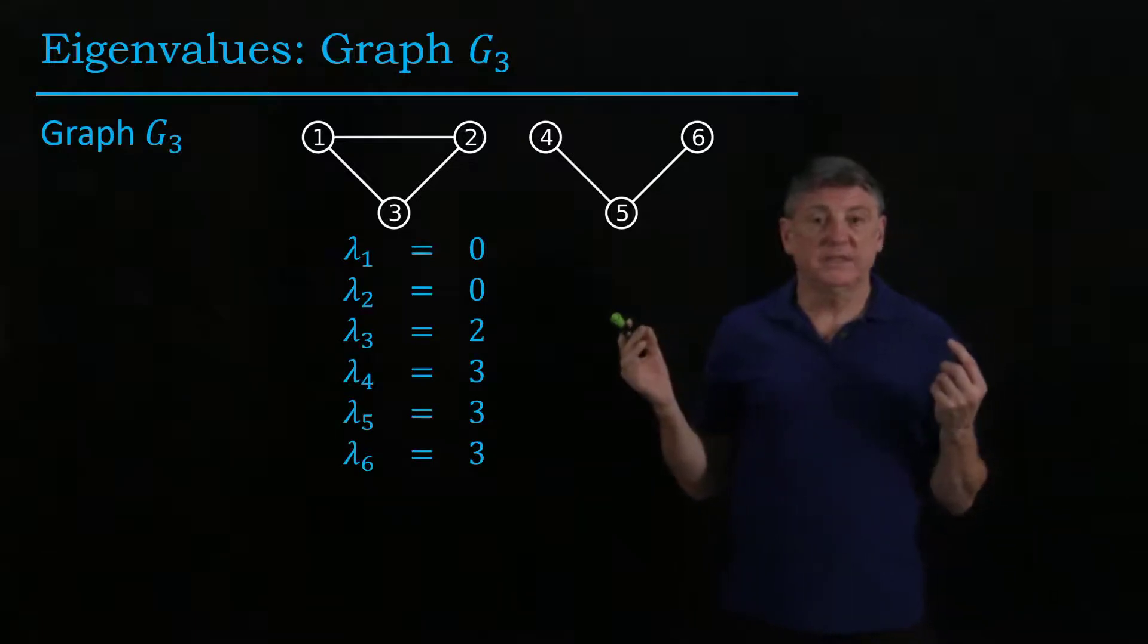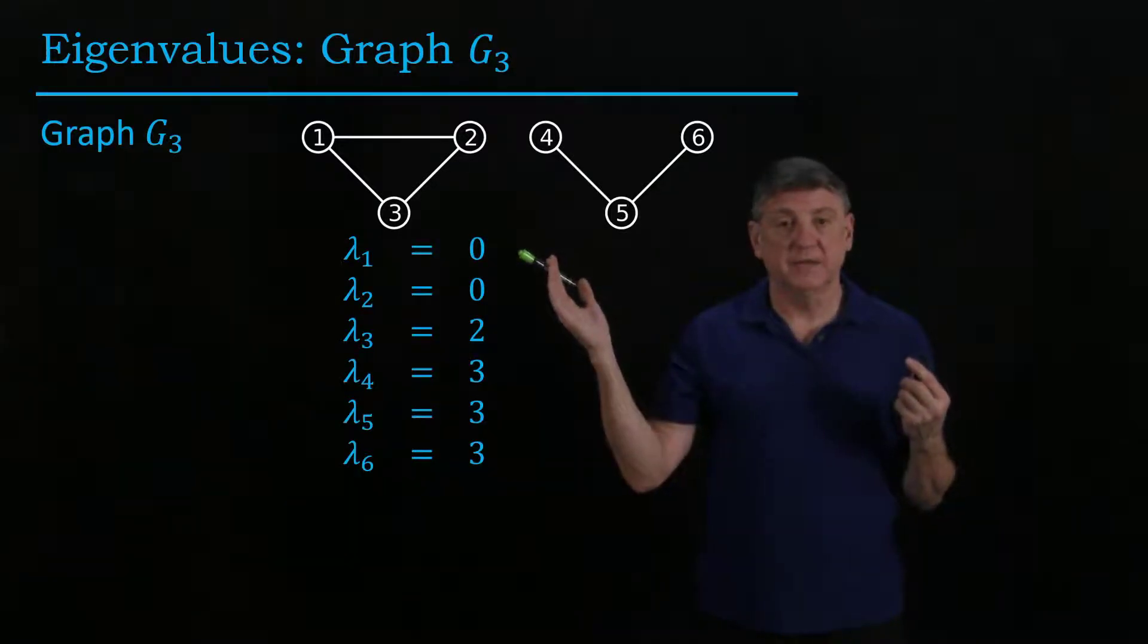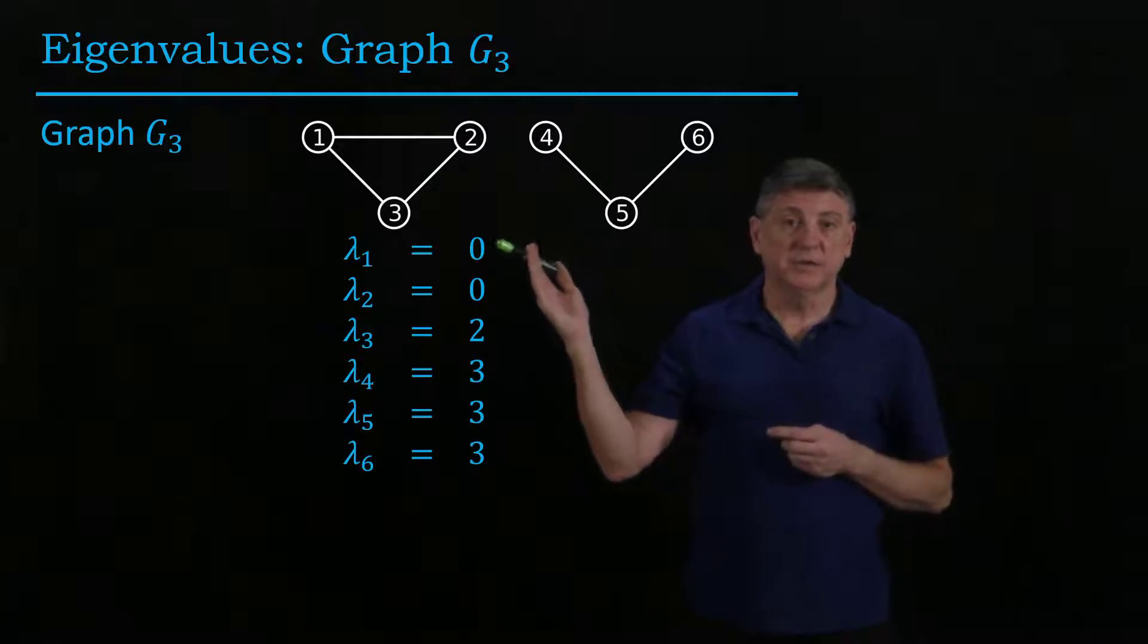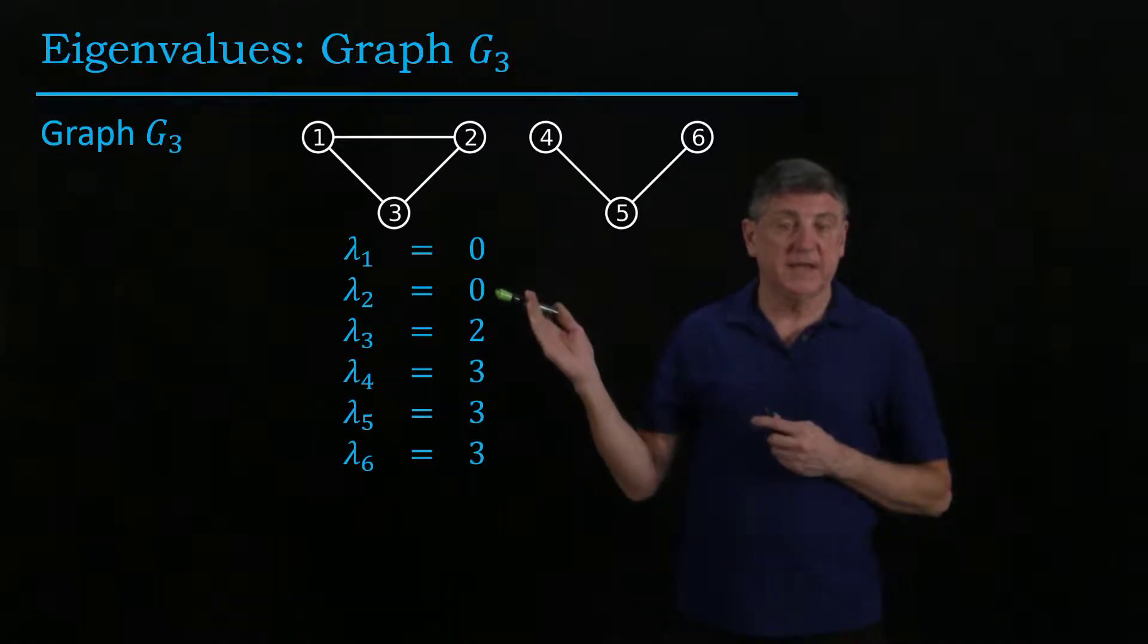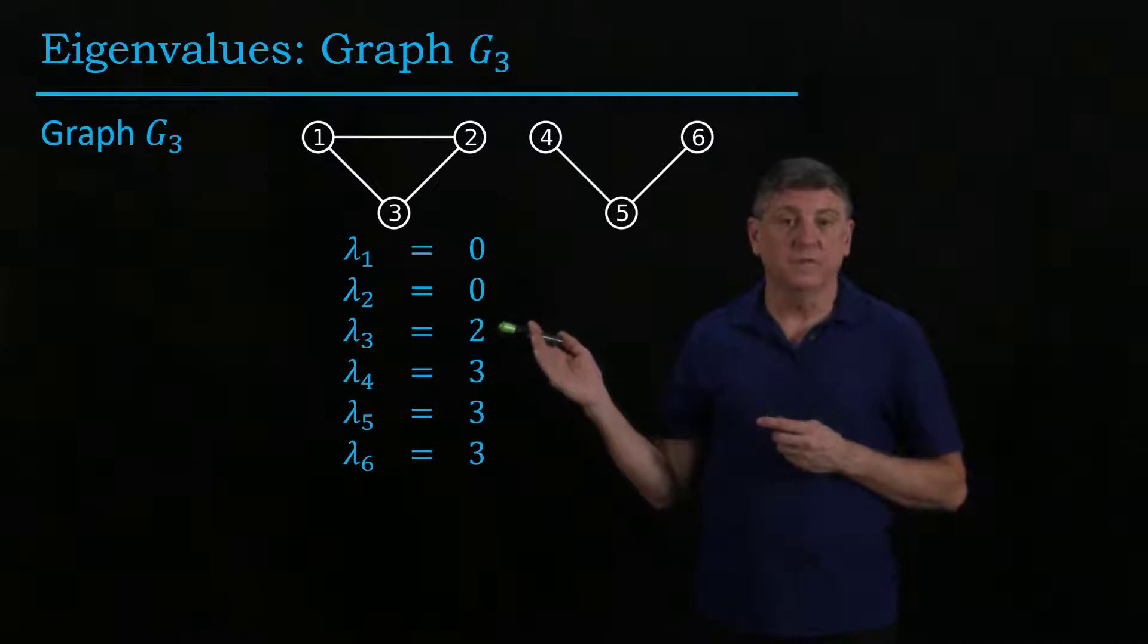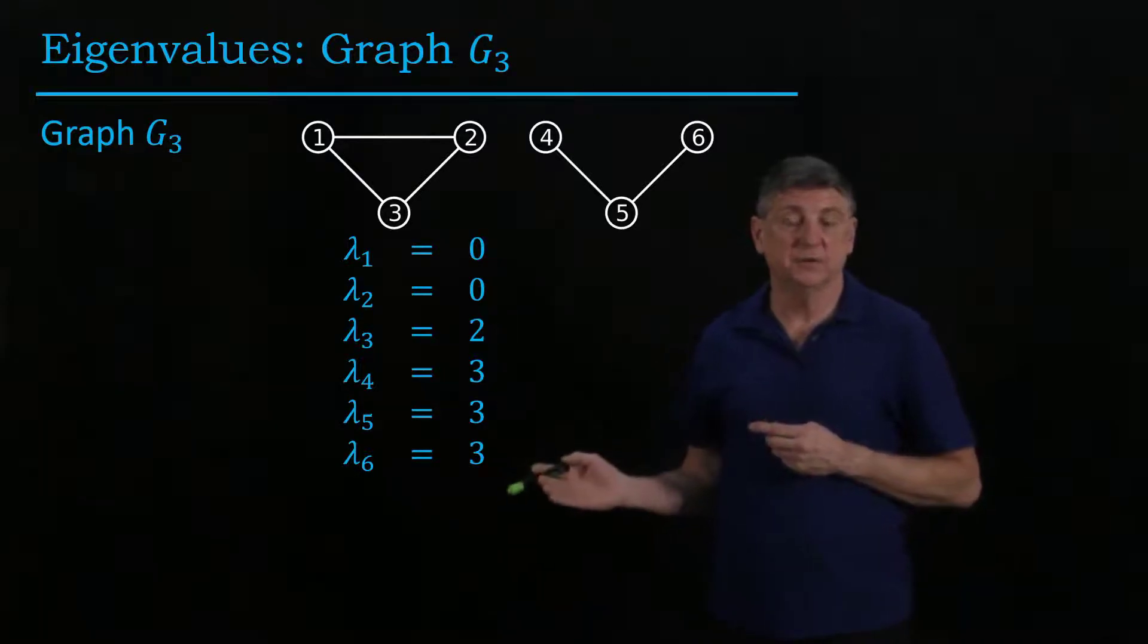Now what we see are that the eigenvalues when we use MATLAB to compute is we're still getting two of these as zeros and one of them is two and then the others are three.